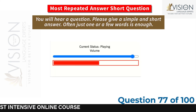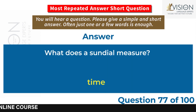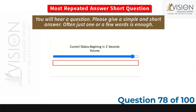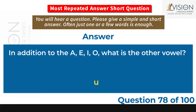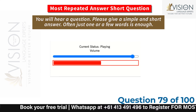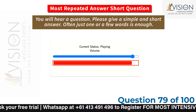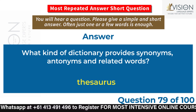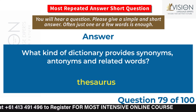What does a sundial measure? Time. In addition to A, E, I, O, what is the other vowel? U. What kind of dictionary provides synonyms, antonyms, and related words? Thesaurus.